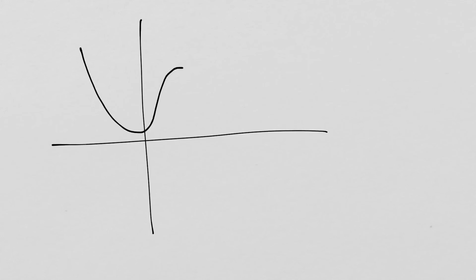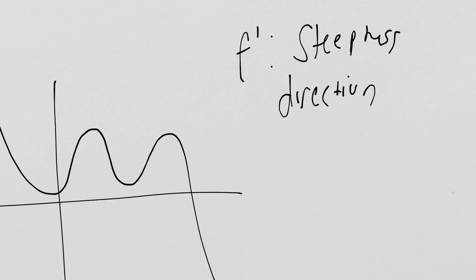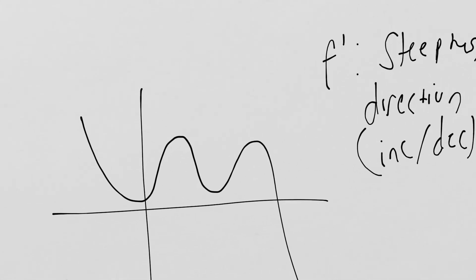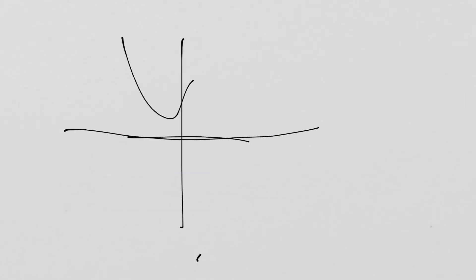The derivative talks to us about the instantaneous slope of a curve — it tells us how steep the curve is. f prime tells us steepness and direction, meaning whether the curve is increasing or decreasing. We can see that when this function is decreasing, f prime is negative. When the function is increasing, f prime is positive.